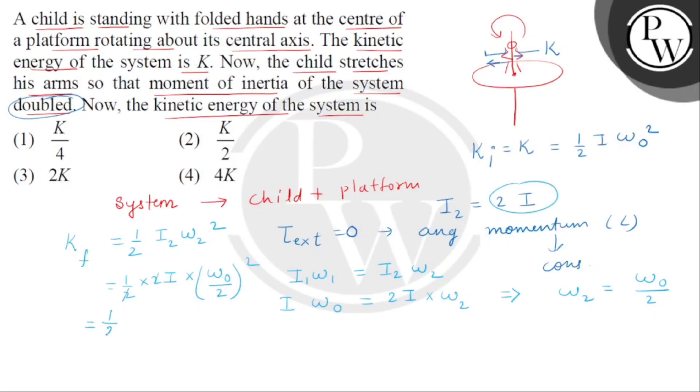We can write it as half. This square is 2 multiplied by 2. So half I omega naught square divided by 2. So now we can rearrange the terms. This was the initial kinetic energy that is K. So the answer is K by 2.